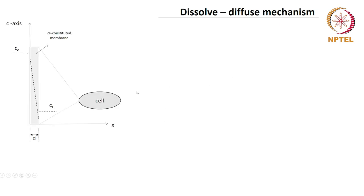Let us look at the dissolve-diffuse mechanism first, and then I will give you some pointers to look at diffusion through pores. To understand the dissolve-diffuse mechanism, let us say that we have a reconstituted membrane — a membrane which does not have any proteins. This is the lipid bilayer indicated here. This is the x direction; we will look at one dimension first. If you have a cell like this and take a small part of the cell membrane, even though it is curved, it can be approximated to a straight membrane, which is what we have done here.